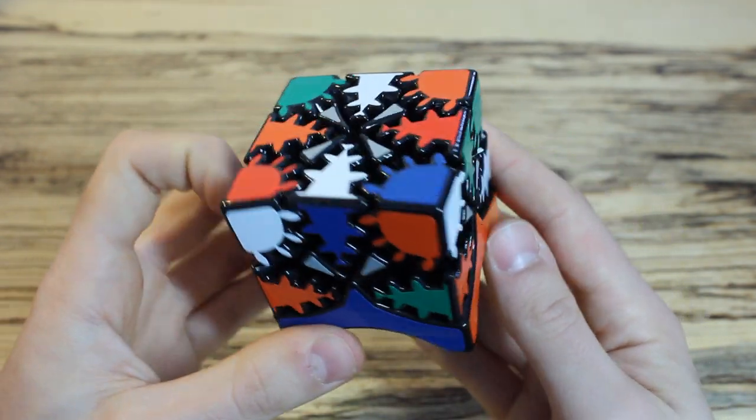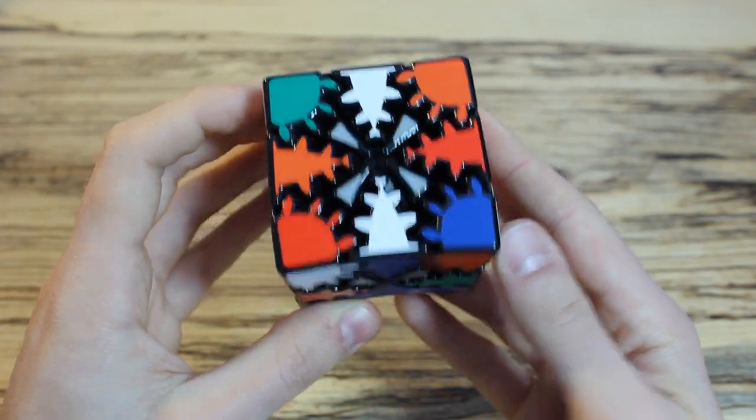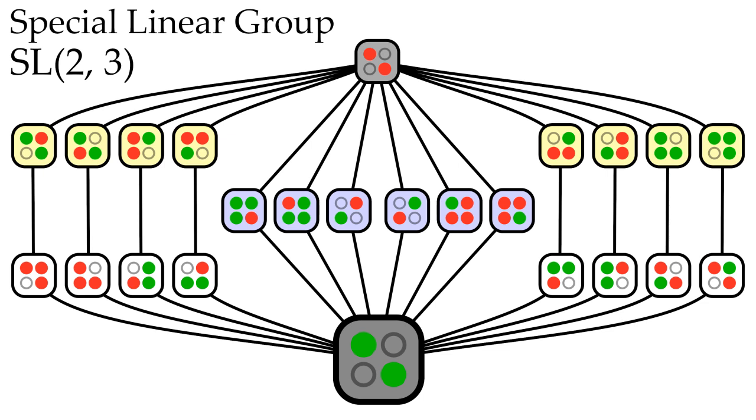The remaining 16 positions where the corners aren't solved are all part of a larger group called the Special Linear Group 2-3, of which Q8 is a subgroup.